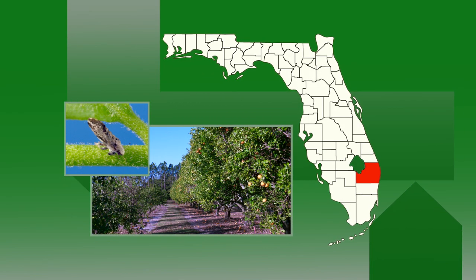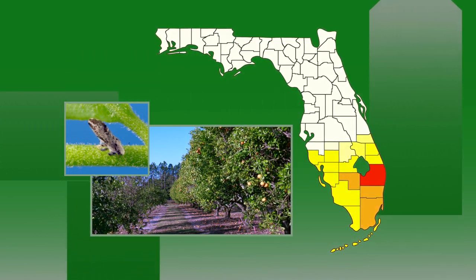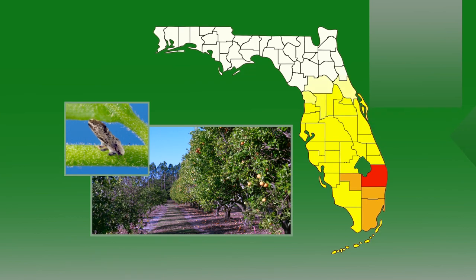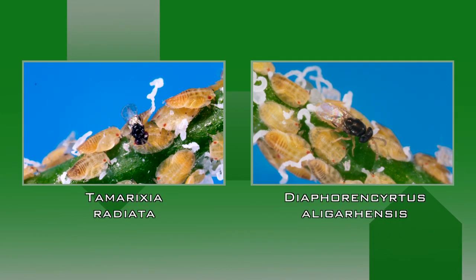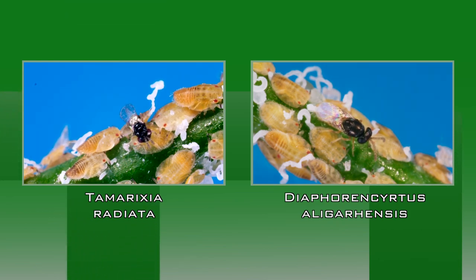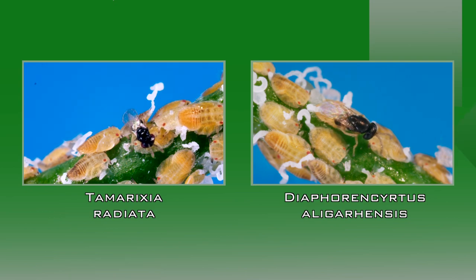The Asian citrus psyllid arrived in Florida in 1998, and with few natural predators, it quickly spread throughout the citrus-producing areas of the state. Two parasitoid species, Tamarixia radiata and Diaphoroncirtis allegorensis, were imported from Asia by the Department and the University of Florida.